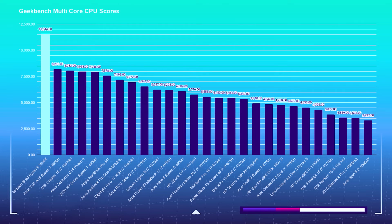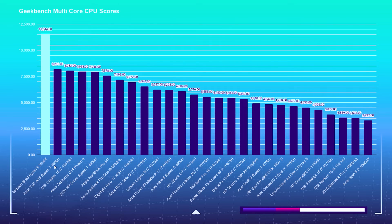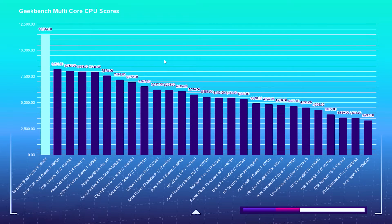Looking at Geekbench multi-core CPU performance, my Ryzen 9 3900X is absolutely crushing the competition — getting almost 12,000 — with the closest being the i7-10875H and the Ryzen 7 4800H. But power is technically a relative term depending on your use case. If you're going to do a lot of multitasking, get a lot of cores and threads. But for single core performance, cores and threads don't determine the height of performance, meaning a lower-cost processor with fewer cores could perform equally well in-app.